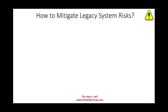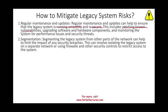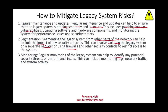To mitigate legacy system risks, first ensure regular maintenance and updates to keep the system running smoothly and securely — this includes patching known vulnerabilities and upgrading software and hardware components as much as possible. Second is segmentation: keep the legacy system separate from the rest of the network so that if someone penetrates it, they cannot reach the whole network. This can involve isolating the legacy system on a separate network or using firewalls, though it may reduce efficiency. Third is monitoring: regularly monitor the legacy system to identify potential security threats or performance issues, including monitoring logs, network traffic, and unusual system activity.